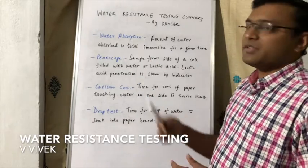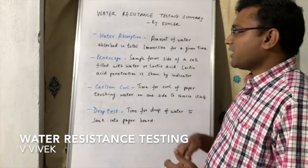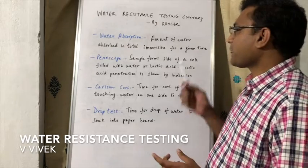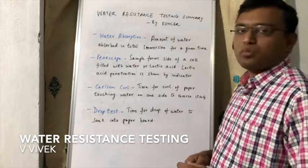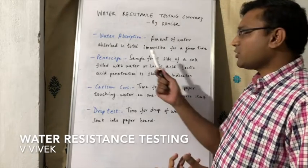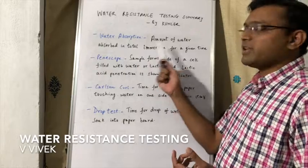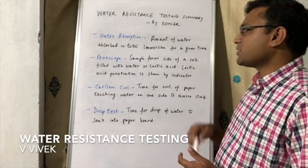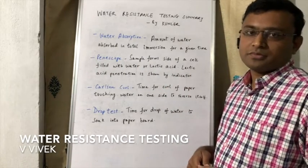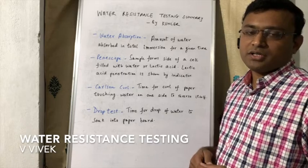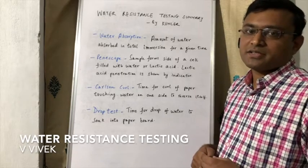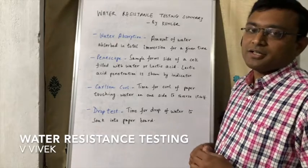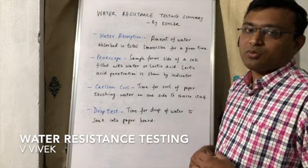Some of the tests include water absorption — the amount of water that is absorbed when the paper is totally immersed for a given time. Usually the weight difference is used as a technique to measure water resistance.